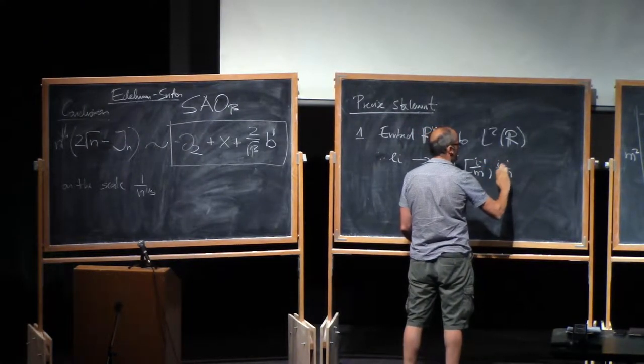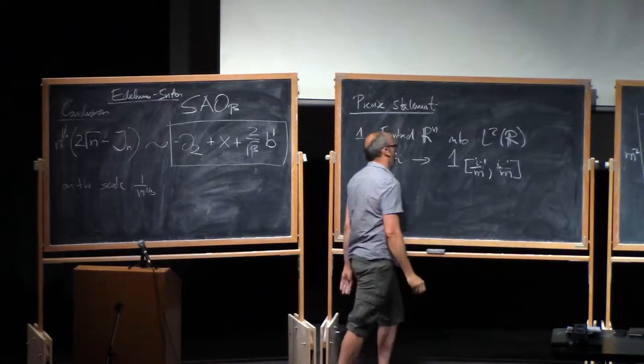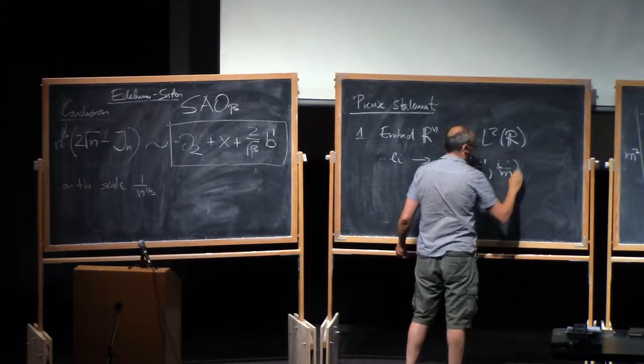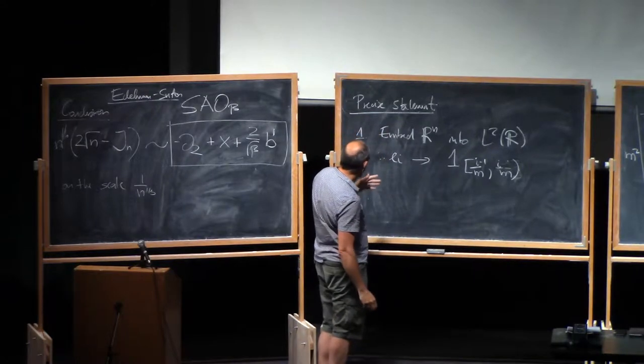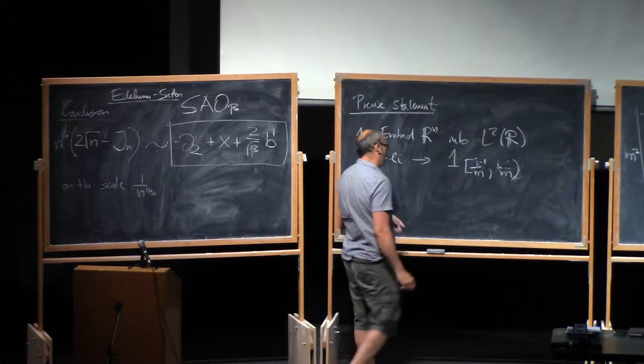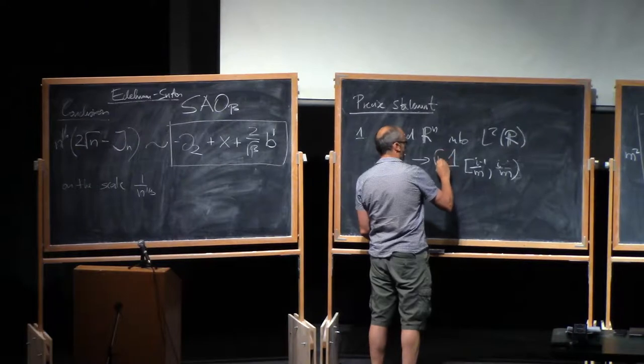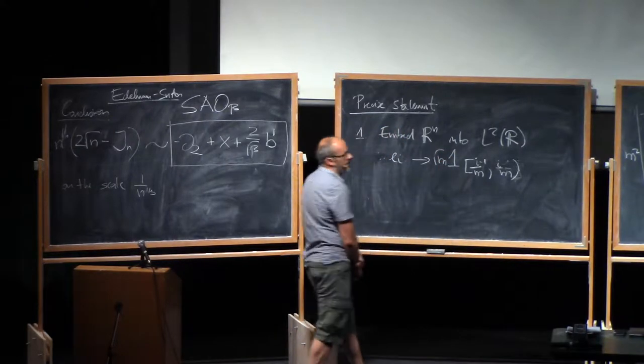So i minus one over i, right, let's make it half open or something, and then for this to be an L2 isomorphism, you have to multiply this by root m, maybe.